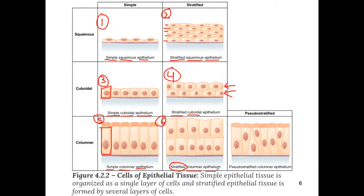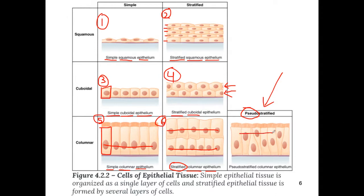There is another possibility called pseudostratified. The word pseudo means false — it really is a simple layer because it's only one cell layer thick, but it gives the illusion of multiple layers. What gives it the illusion is the level of the nuclei. When nuclei lie at different levels, it looks stratified but isn't, so we call it pseudostratified.